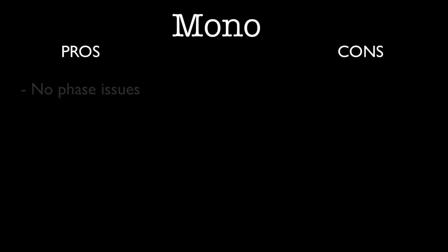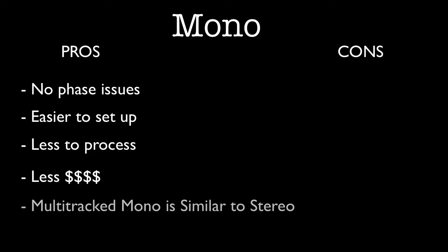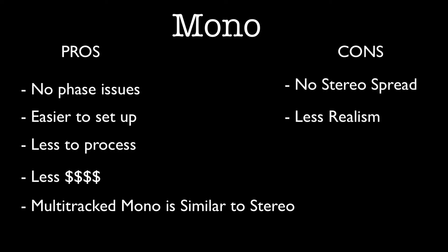But then there's good old mono — you really can't go wrong with it. There are no phase problems, it's easier to set up, there's less to produce, it's cheaper, and you can just multi-track mono takes and pan them to get a similar stereo effect. The only downside? On its own there's no stereo spread, which means a bit less realism.